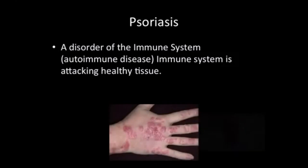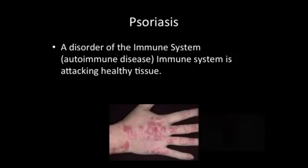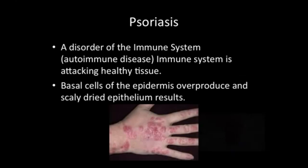Psoriasis, like eczema, is a disorder of the immune system, but it's more chronic, meaning it doesn't necessarily go away. It does get worse at times and then the inflammation can go down. Again, the immune system is attacking healthy tissue — it's quite common on the scalp and on the hands. There are some treatments involving topical hormone creams and exposure to ultraviolet light. There is no known cause other than the immune system attacking healthy tissue — this makes it an autoimmune disease. The scaly patches arise because the basal cells of the epidermis overproduce and scaly, dried epithelium results.